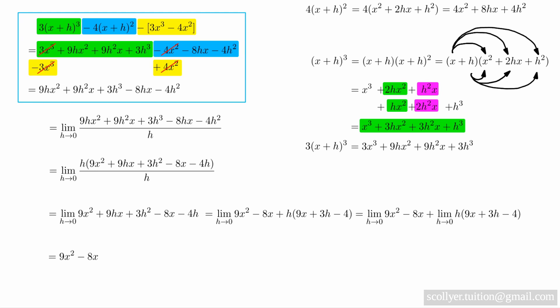We obtain as a final result, 9x squared minus 8x. Thus, if f of x equals 3x cubed minus 4x squared, then f dashed of x equals 9x squared minus 8x.